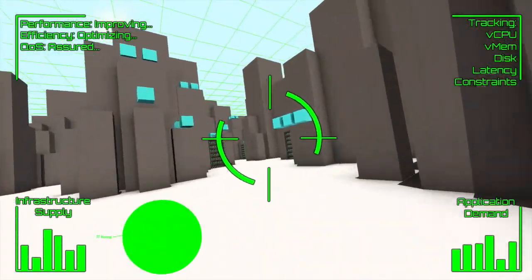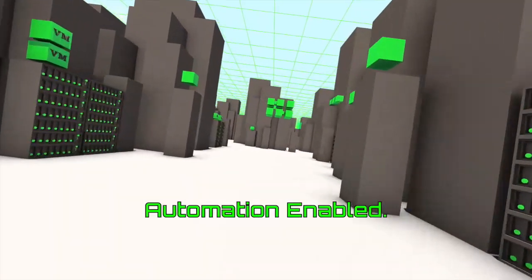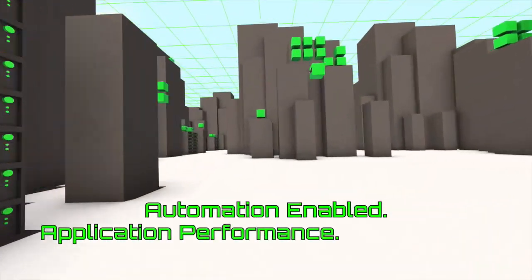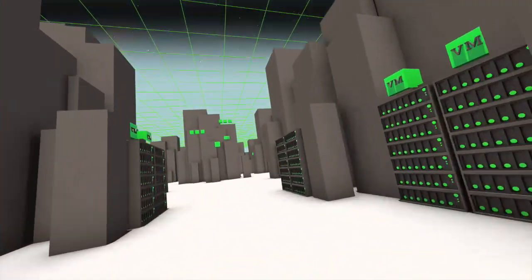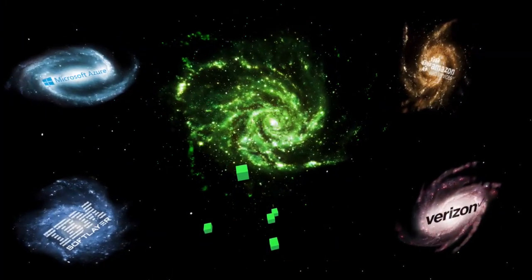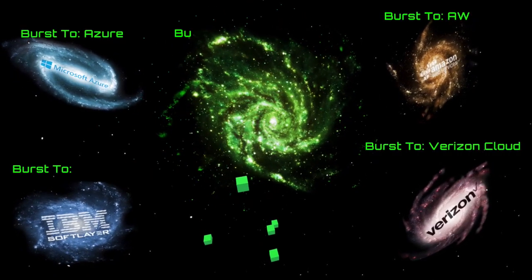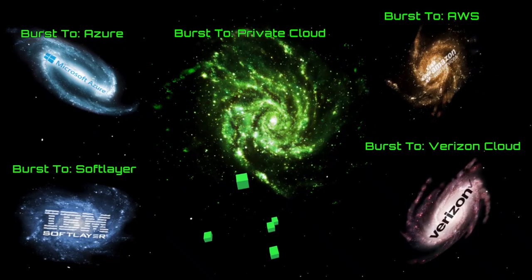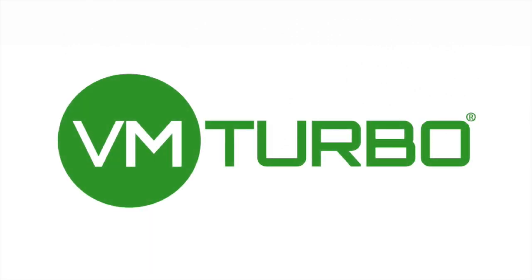VM Turbo, initiating automation. DC Command, we're maxing out down here — options? DC Command, control extends to the public cloud. Your VMs and containers know the best cloud for their needs. Burst at will. VMs, containers, deploy to public cloud at will. Welcome to control command. Enjoy the view.